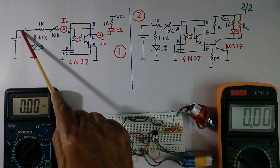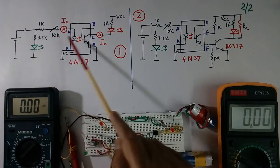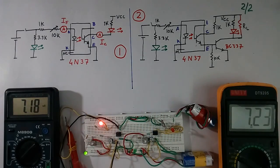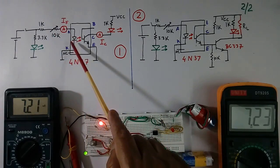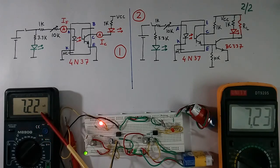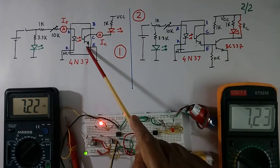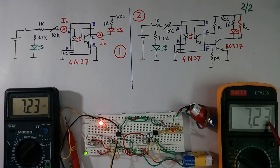Now I will press this switch, so this will become ON, this also will be ON. This switch is this, this LED is this. Current flowing here in LED 7.22 mA. Current flowing in this is 7.23 mA.